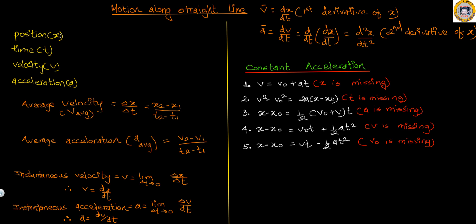The position, which is denoted by x, and the time, which we all are familiar with. The terms velocity and acceleration are equally important. The average velocity is delta x over delta t, which is change in position over change in time. Similarly, the average acceleration is changing velocity over time period, so v2 minus v1 over t2 minus t1.